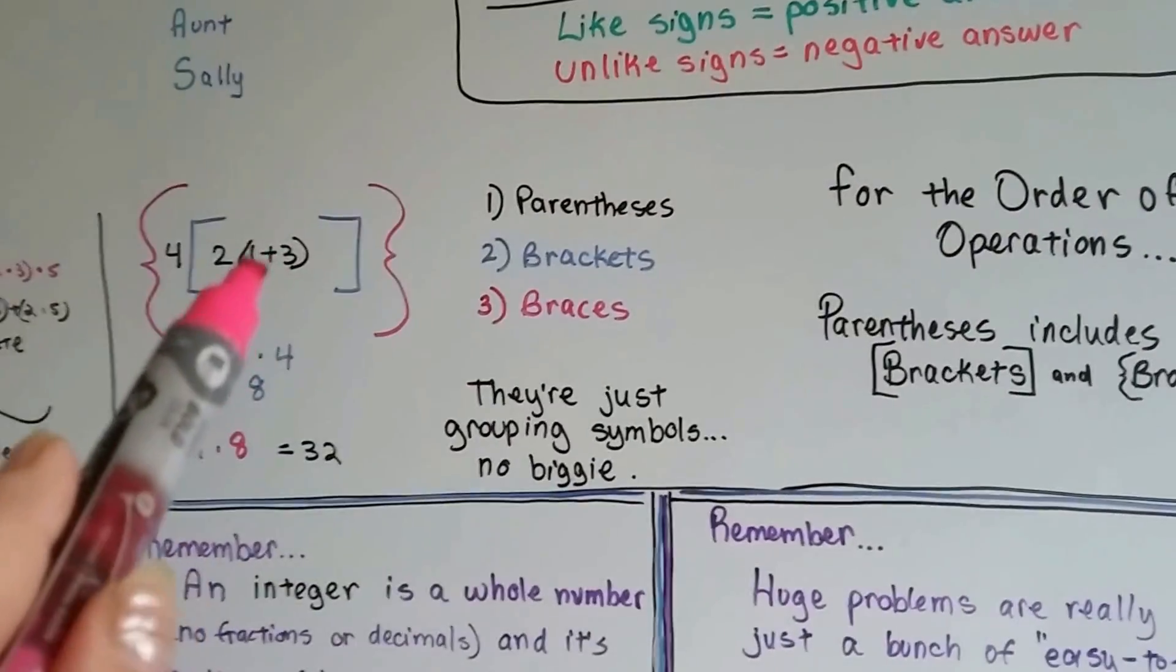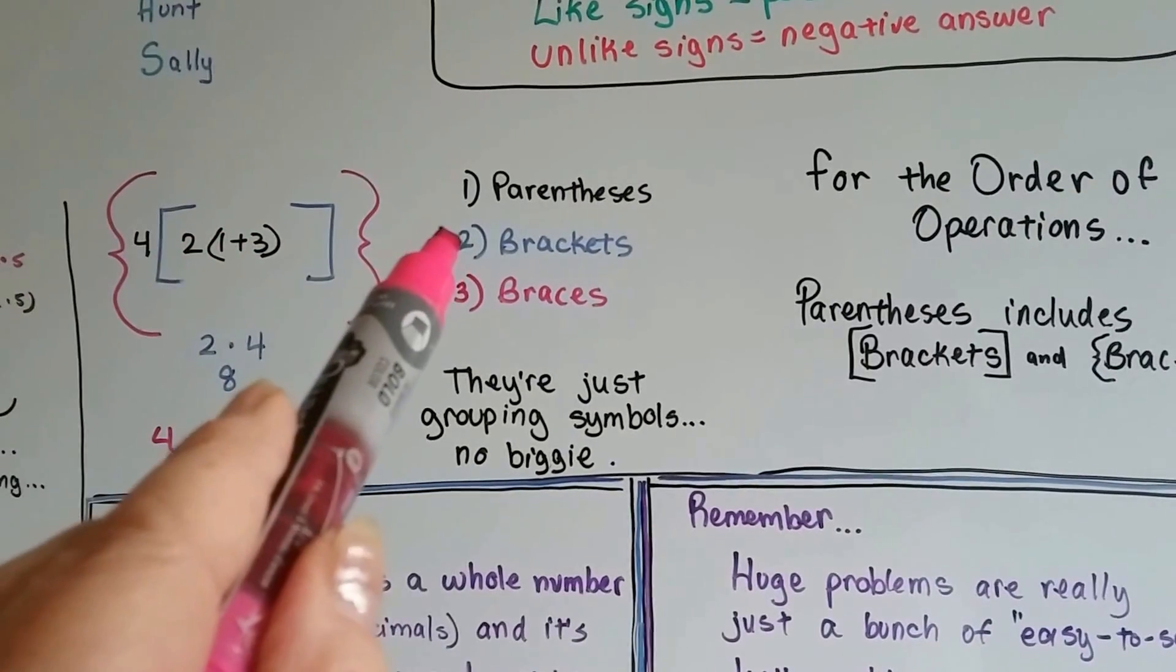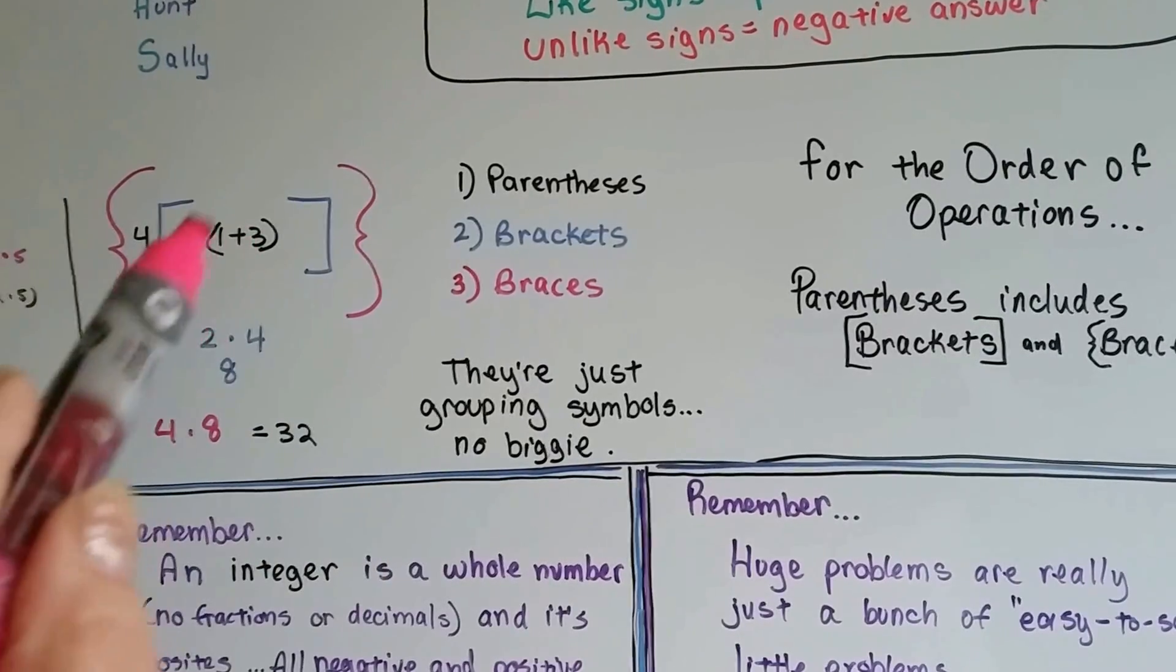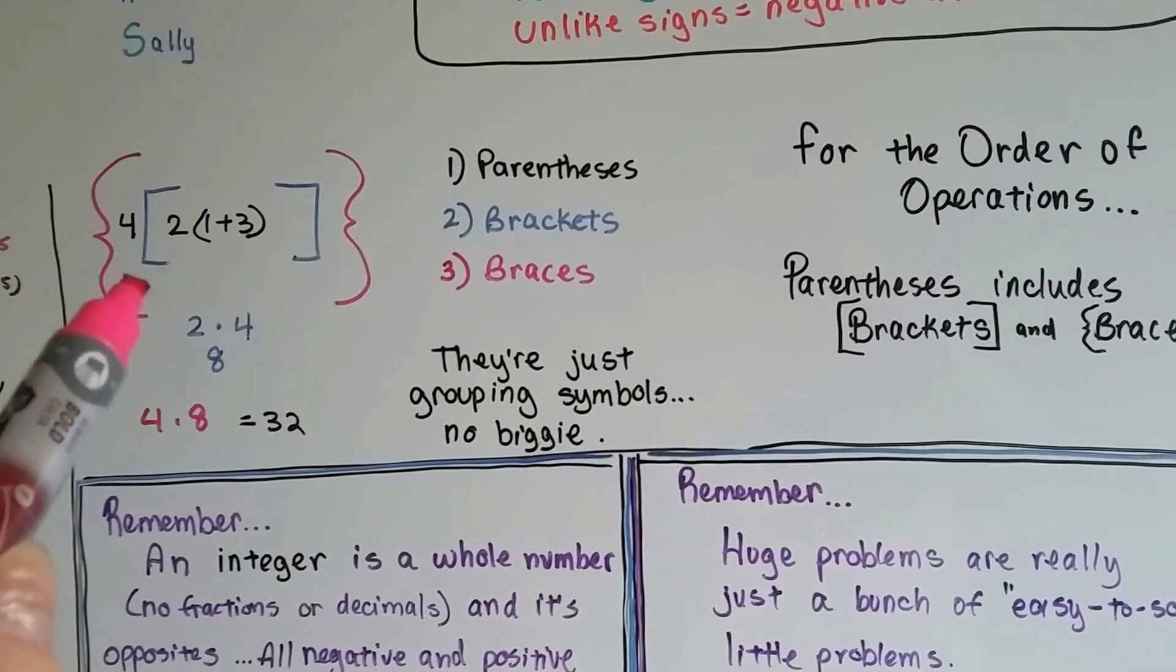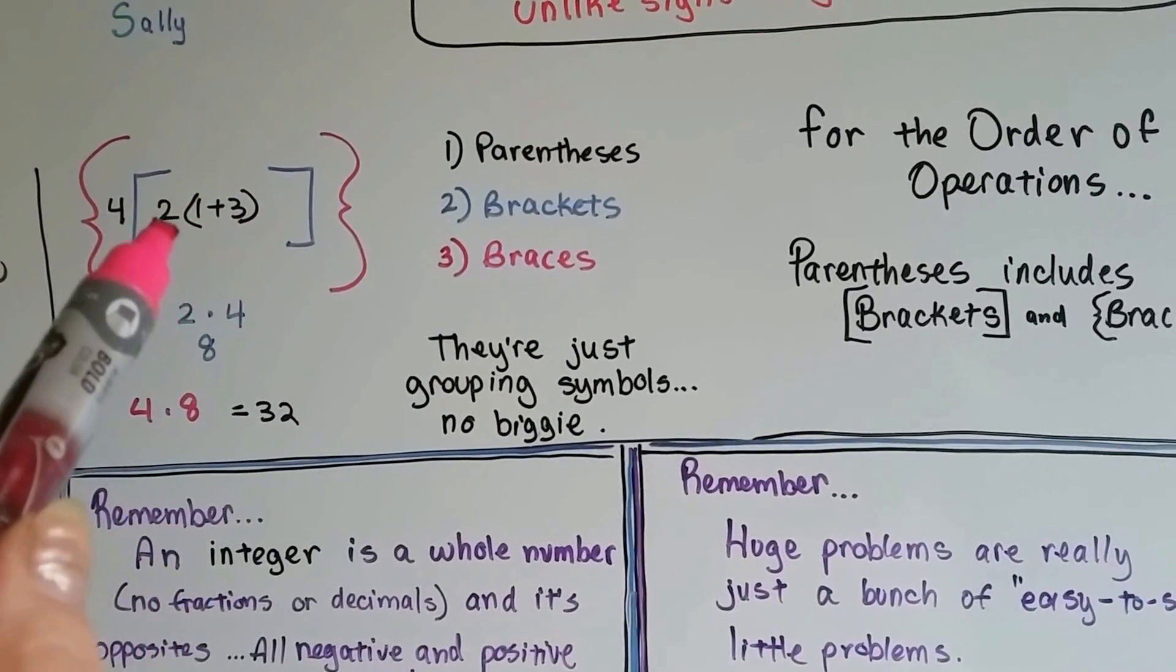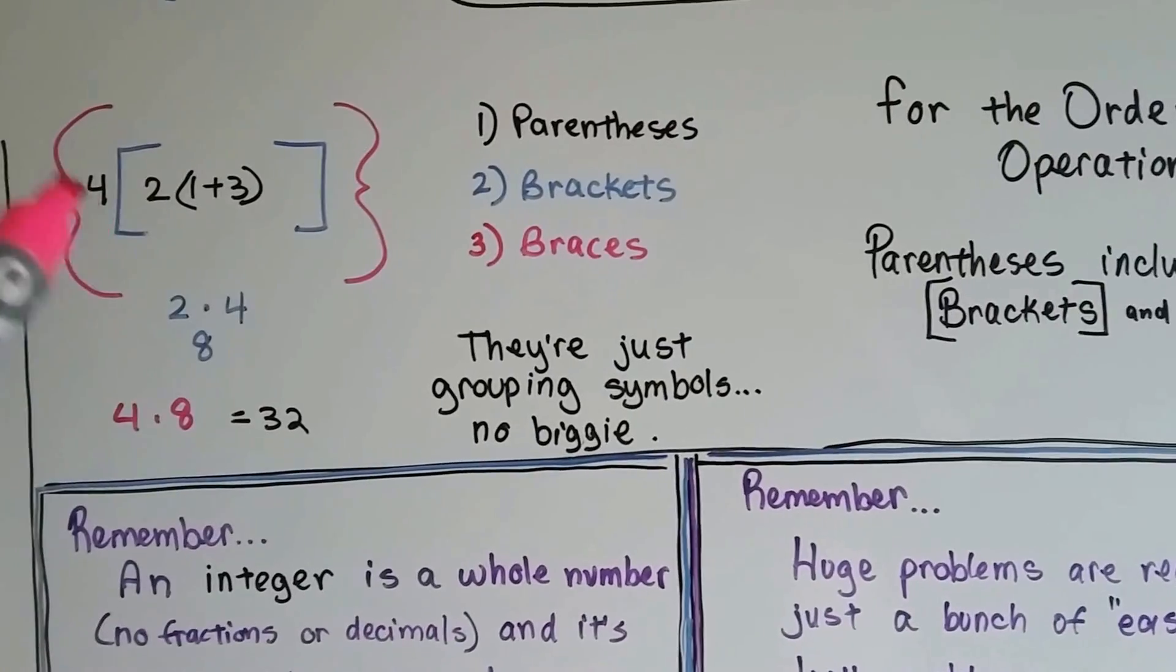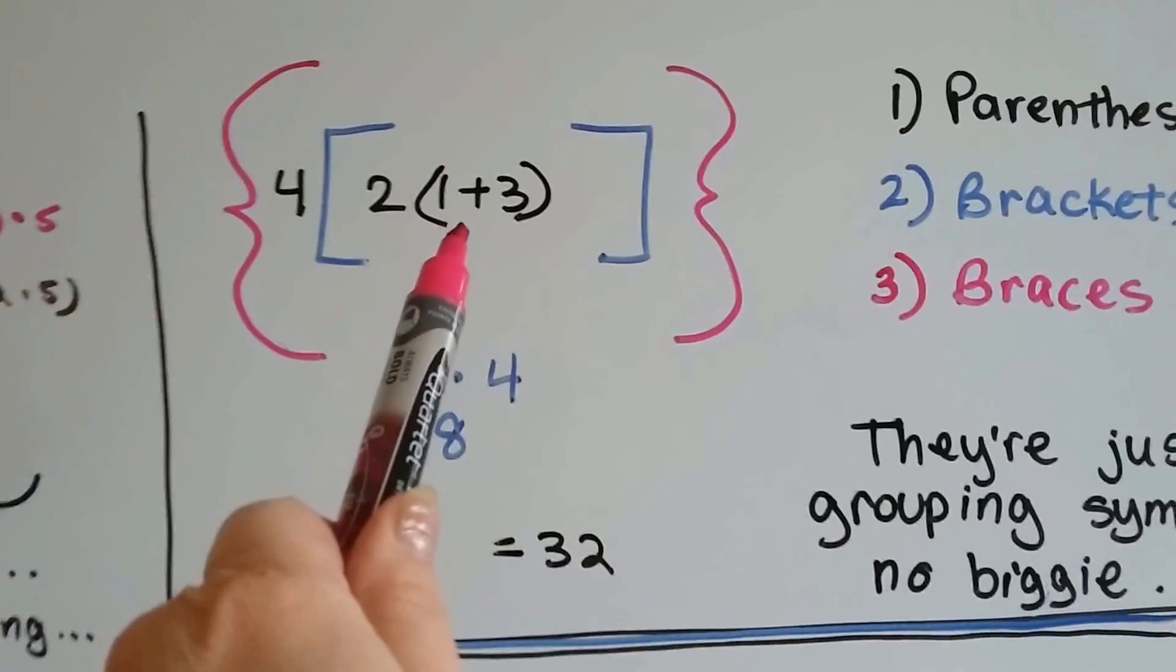So, if you have a parentheses and then a multiplication, well then do it. But, if the multiplication is outside the bracket, make sure you did whatever was inside the parentheses first, before you moved outside of it to the brackets. Make sure you do everything within the brackets before you do the braces part, what's outside the brackets. So, let's look at this.